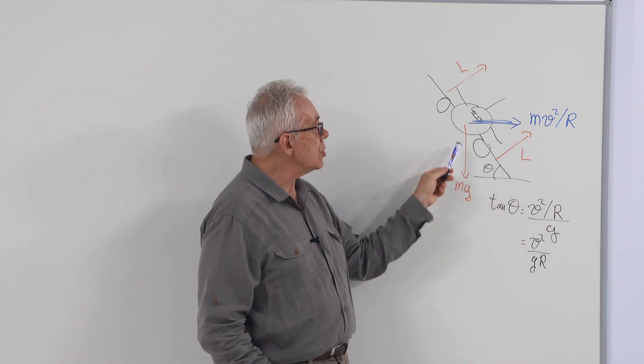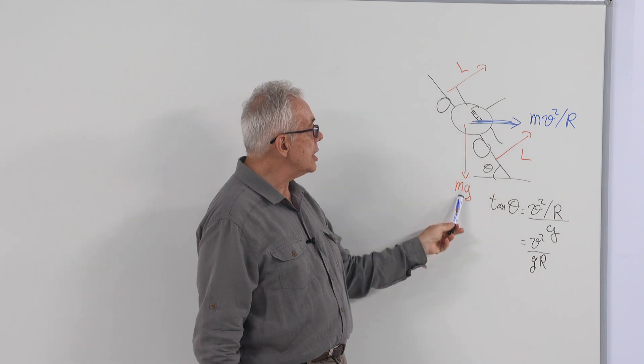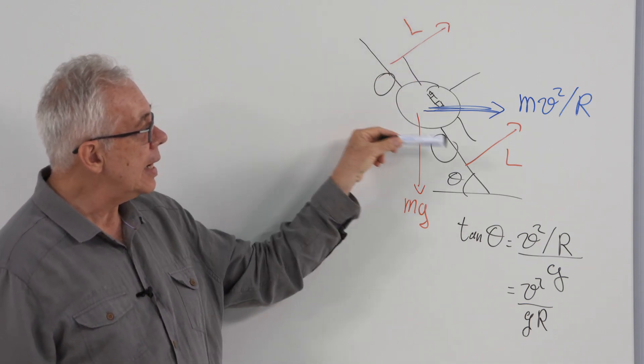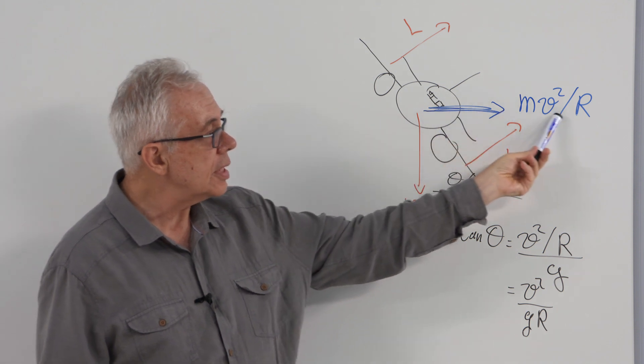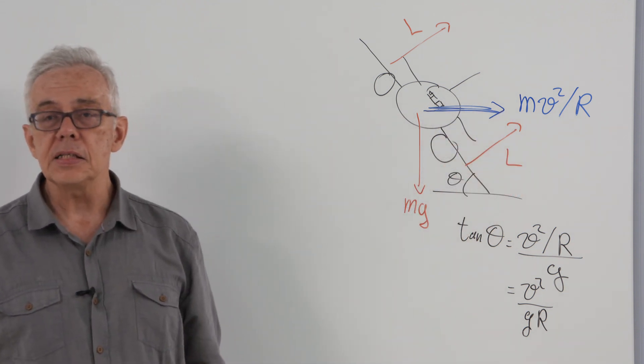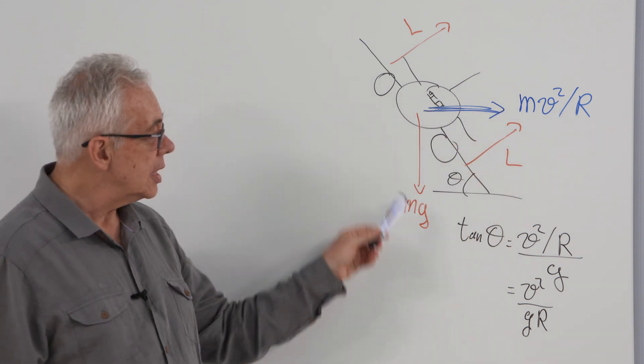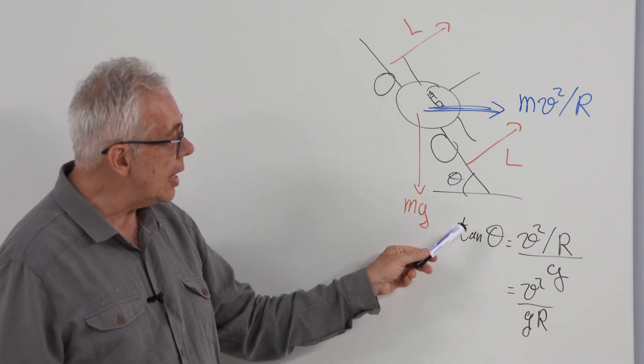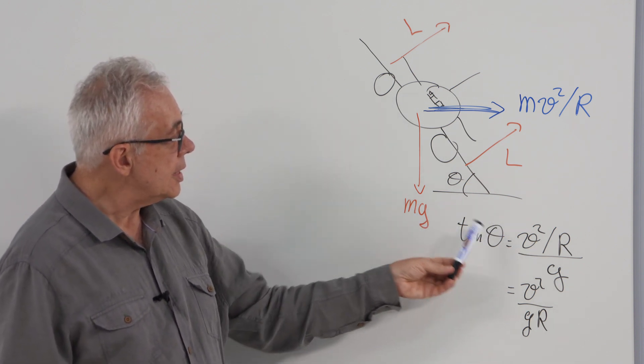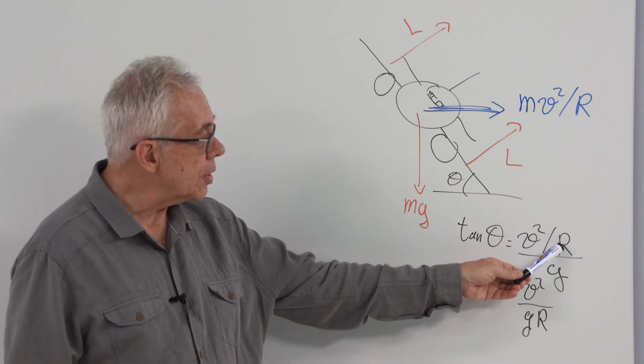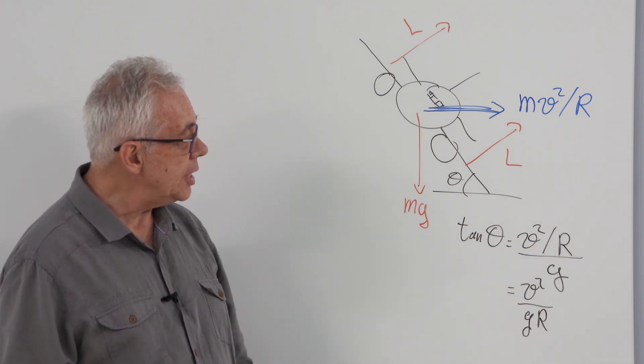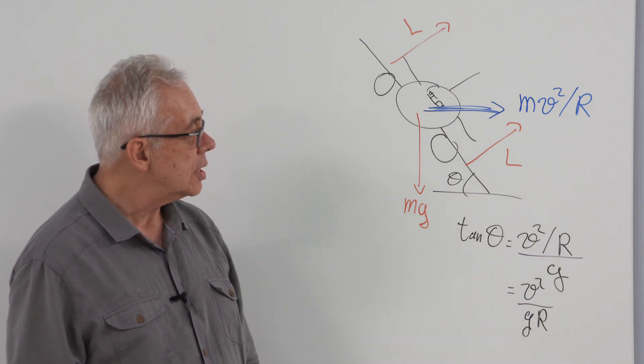The vertical component of the lift force is cancelling out the mg gravity. And the horizontal component is providing centripetal acceleration. The banking angle can be found from this. The tangent is v squared over r divided by g, or v squared over rg.